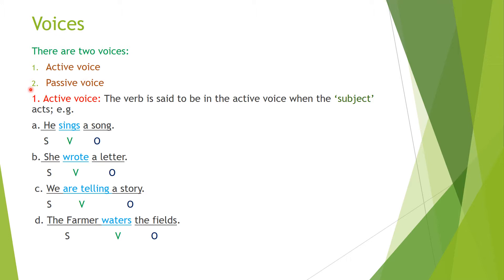We will start with the definition of active voice. The verb is said to be in the active voice when the subject acts. It is very easy. Although it may seem difficult, I guarantee you that if you watch this video and try to understand it, all the difficulties with this subject and topic are going to go away. A sentence will be active voice when the subject performs the action.